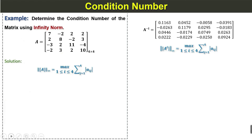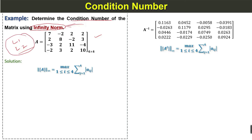Now we will understand this concept with an example showing how to find the condition number of a matrix. The example asks us to determine the condition number of the matrix using the infinity norm. This illustrates the earlier point that the condition number depends on which norm we choose. We can also use the L1 norm or L2 norm to find the condition number, and we can compare the results when we apply these to a matrix.